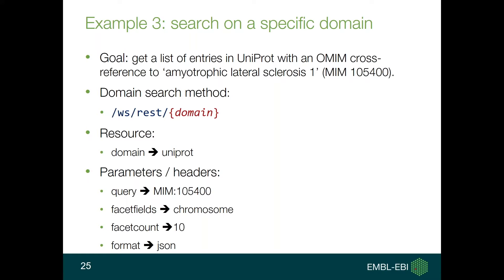We are searching using the domain search method with UniProt as the domain. We specify a query of MIM colon the identifier just cited — this is a specific case of EBI Search query syntax. As a facet, we extract a field called chromosome, so we will see which chromosomes are related to our search results. The facet count sets the maximum number of values to retrieve from each facet, and the format is JSON.